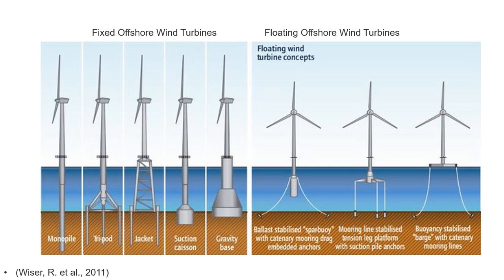Offshore wind turbines have two categories: fixed offshore wind turbines, which include designs such as monopile base, tripod base, jacket base, suction caisson base, and gravity base; and floating offshore wind turbines, which have different base installations including ballast-stabilized spar buoy with catenary mooring drag-embedded anchors, mooring line-stabilized tension-leg platform with suction pile anchors, and buoyancy-stabilized barge with catenary mooring lines.